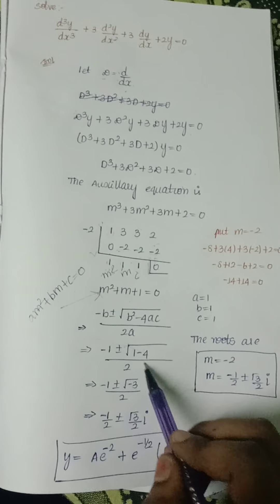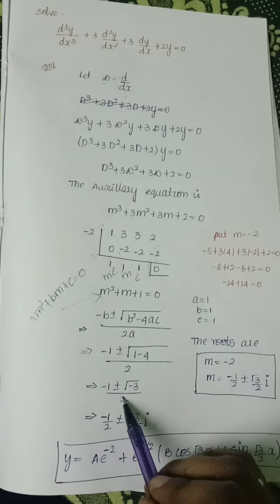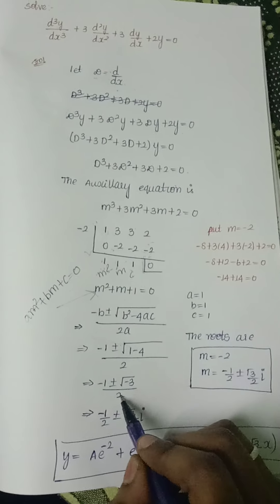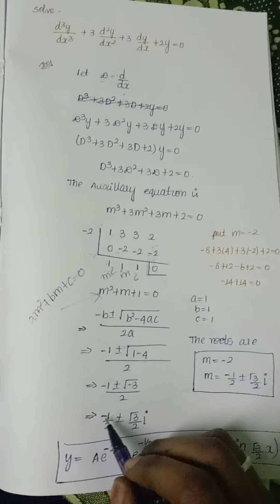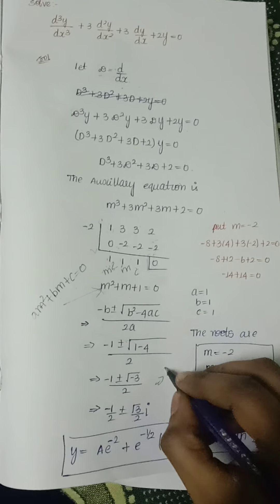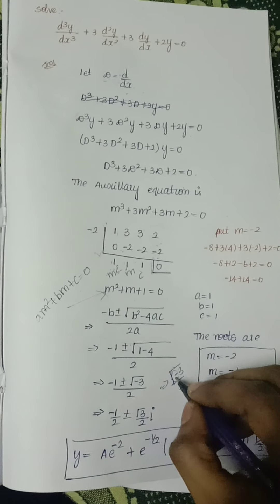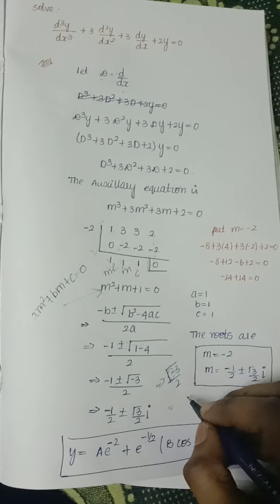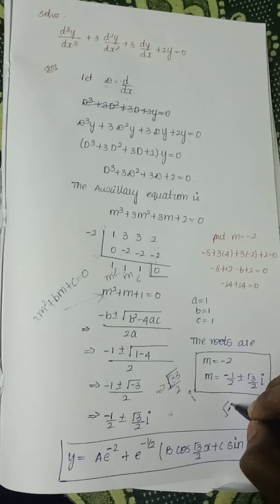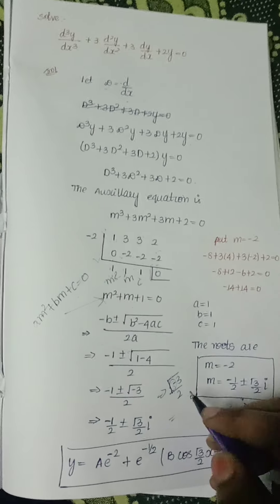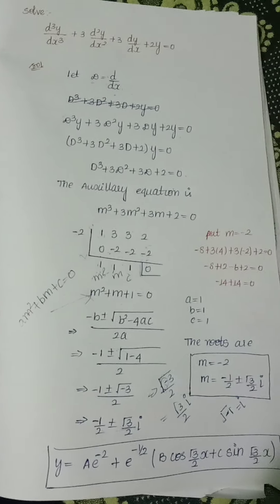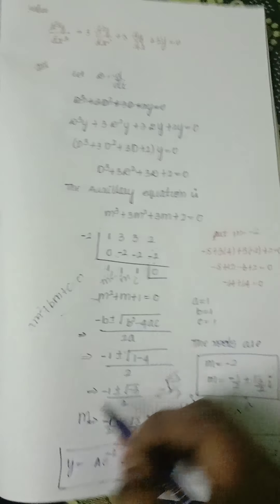Since 1 - 4 = -3, we get m = (-1 ± √(-3)) / 2. Splitting the terms: m = -1/2 ± √3/2 · i, since √(-1) = i. So the complex roots are m = -1/2 ± (√3/2)i.